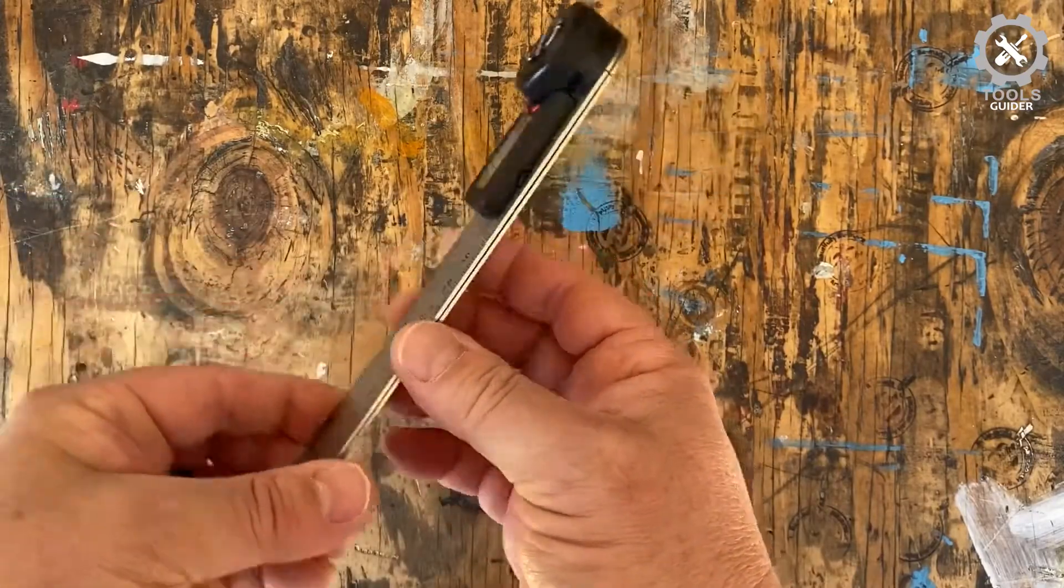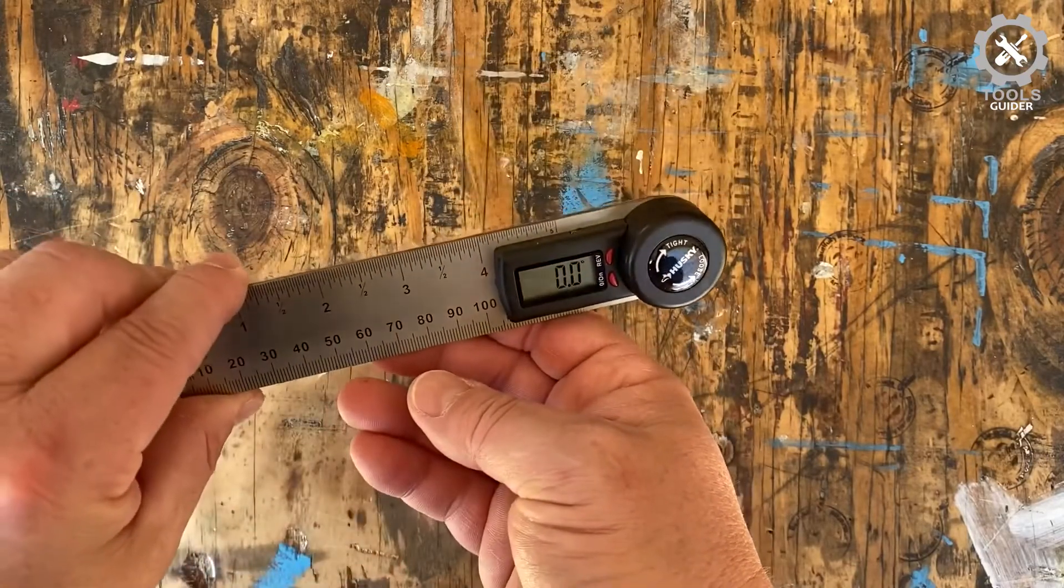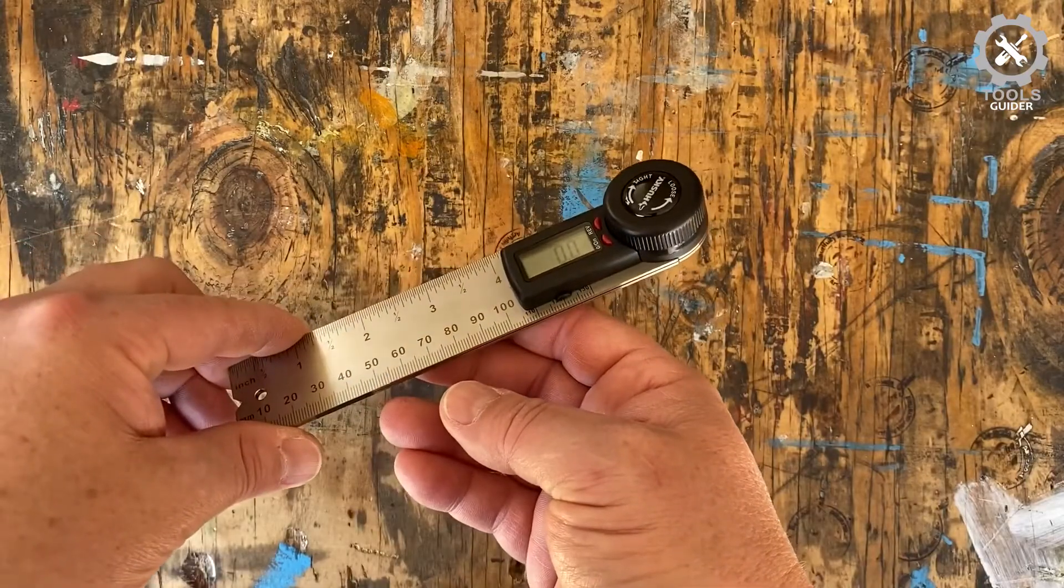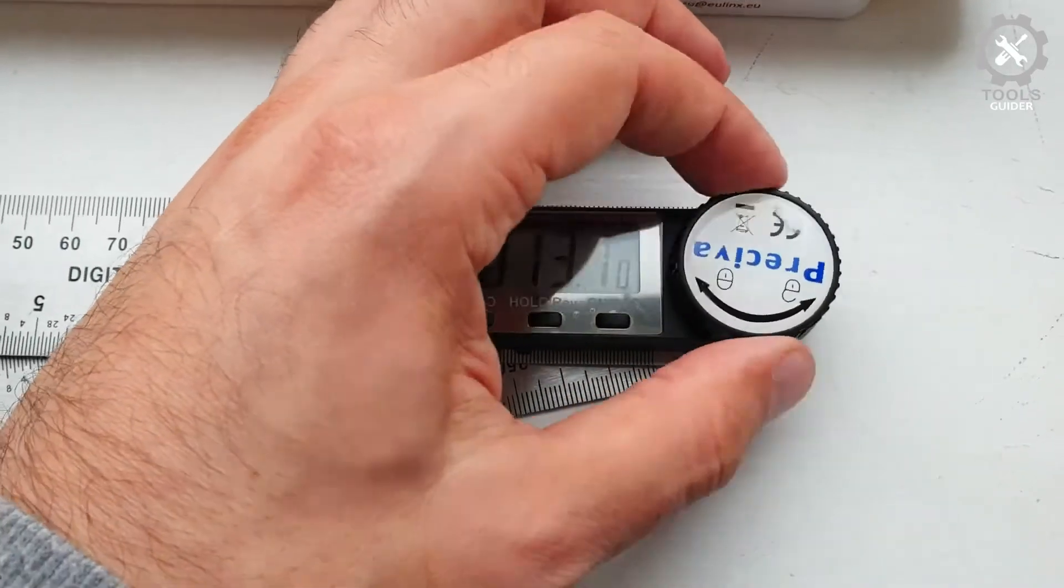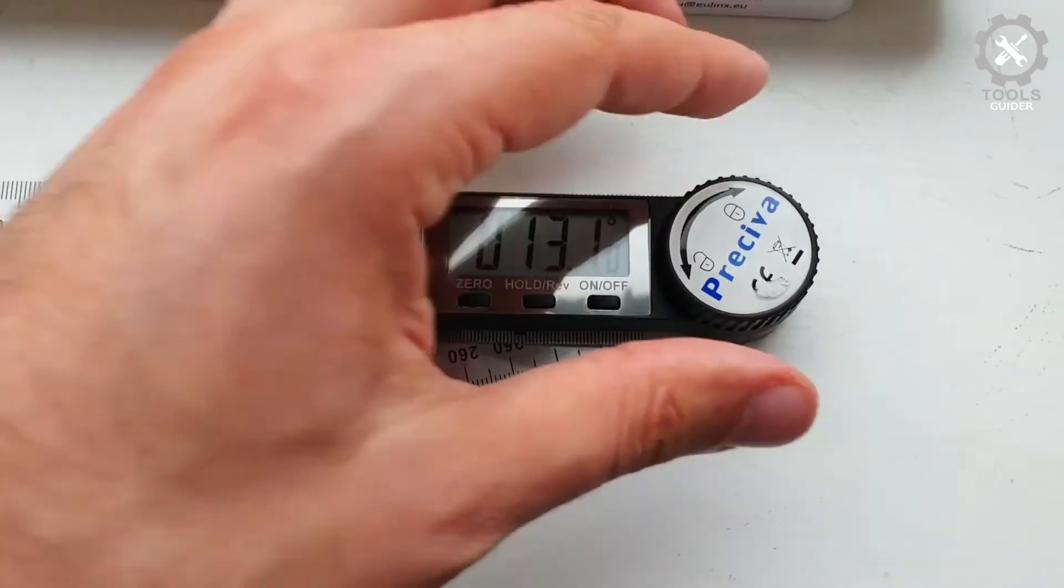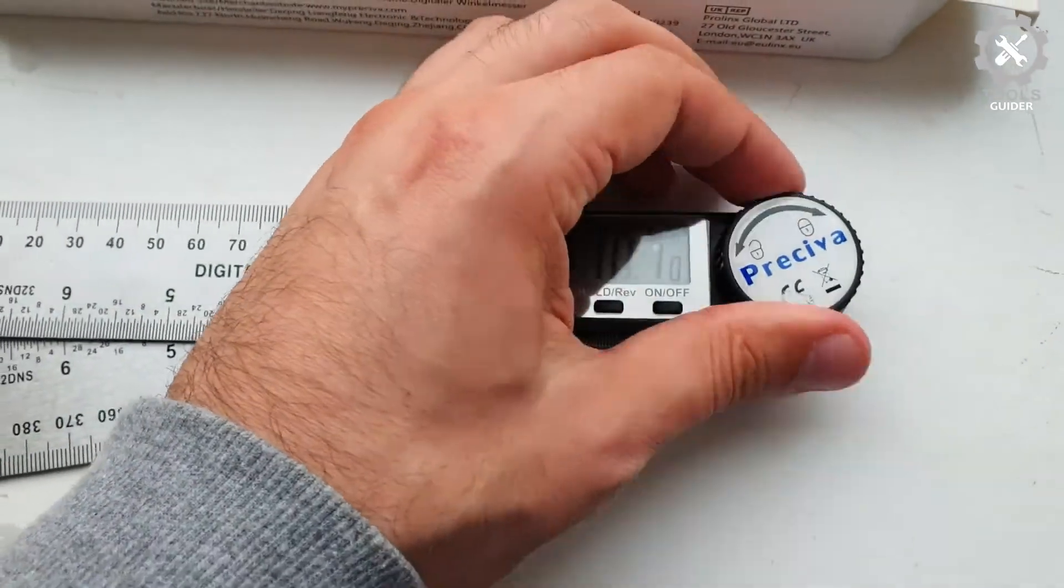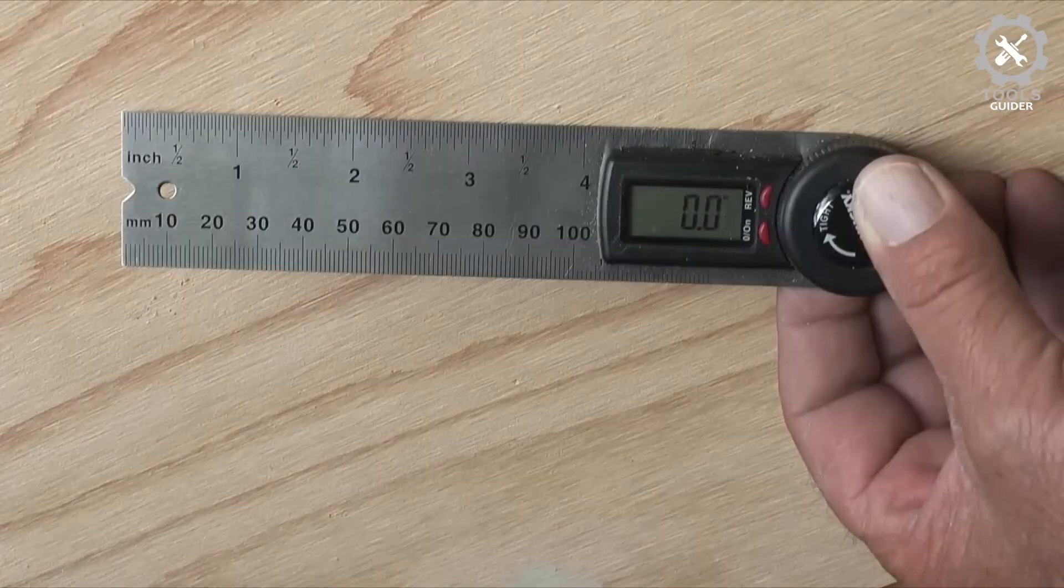The locking function is convenient with the locking screw that can be pressed at any time for all different angles. It can be maintained accurately and read easily. The stainless steel material is durable for measuring both inner and outer angles.